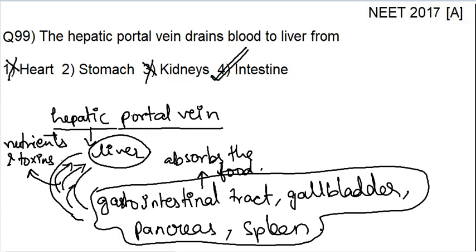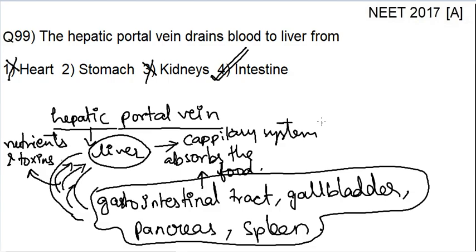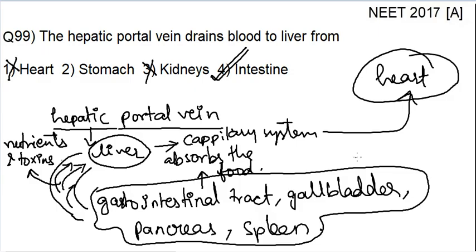This hepatic portal vein, after taking blood rich with nutrients and toxins into the liver — in the liver, all the toxins are eliminated. Then the blood enters into the capillary system. The capillary system is the place where the arteries meet with veins. There, nutrients are exchanged and then the blood reaches the heart.